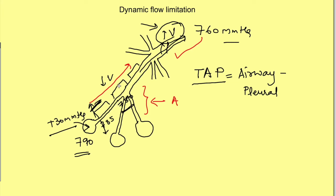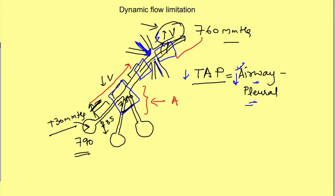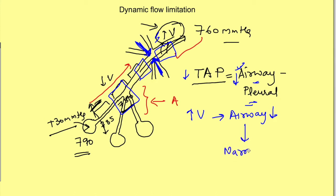Further along the airway, trans-airway pressure is less because airway pressure has dropped further. There may be a point where airway pressure becomes less than pleural pressure. When that happens, the outside pressure is greater than the pressure inside the airways, and this causes narrowing of the airways. As velocity increases there is more drop in airway pressure, which leads to further narrowing of the airways.